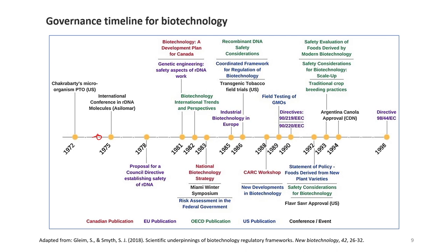In 1981, a biotechnology development plan for Canada was established, addressing genetic engineering safety aspects of rDNA work. In 1982, there were biotechnology international trends and perspectives, and in 1983 the national biotechnology strategy and Miami Winter Symposium, where risk assessment in the federal government was developed. In 1985, there was development of industrial biotechnology in Europe, and in 1986 recombinant DNA safety considerations, the coordinated framework for regulation of biotechnology, and transgenic tobacco field trials in the US took place.